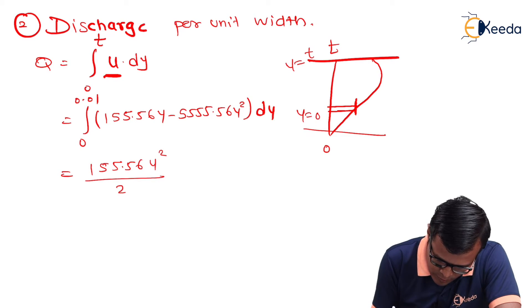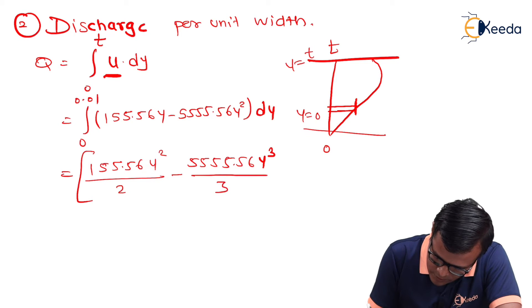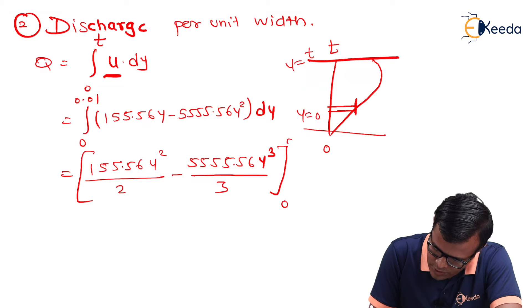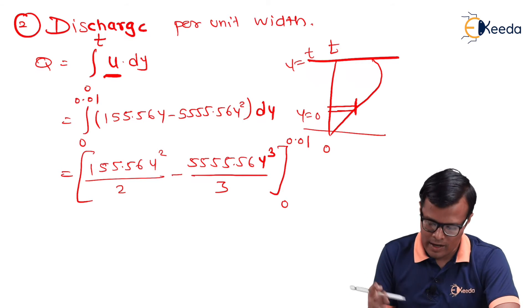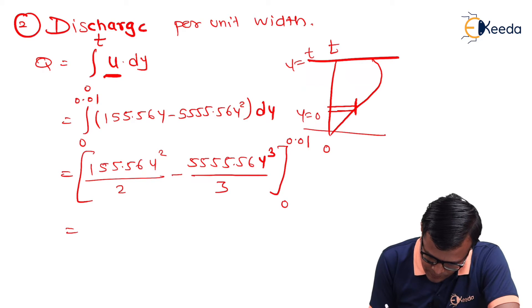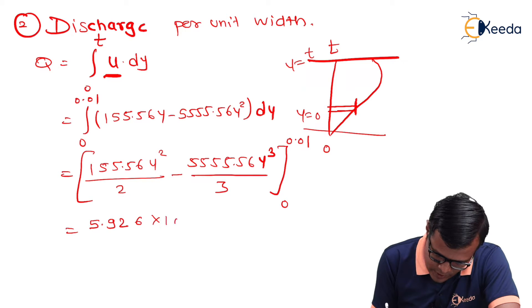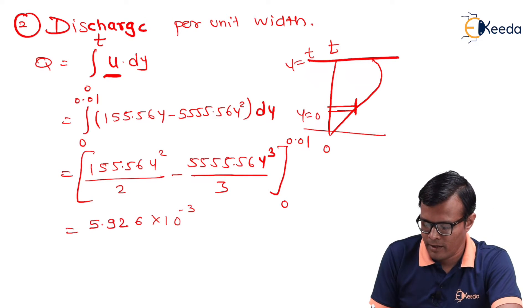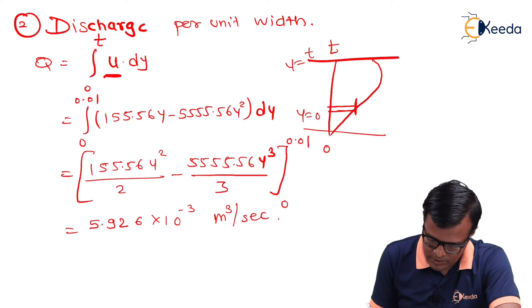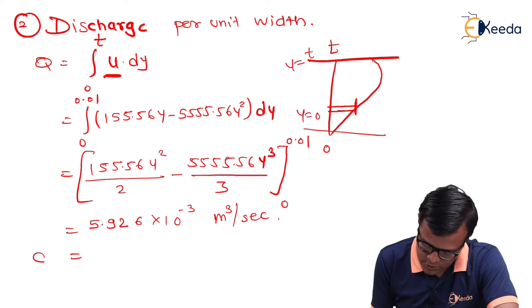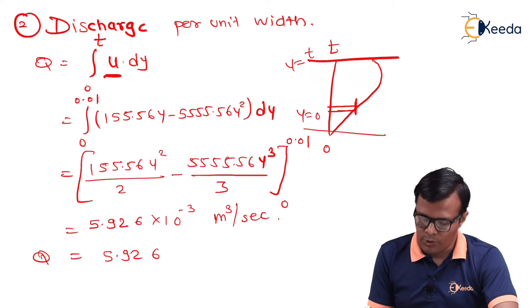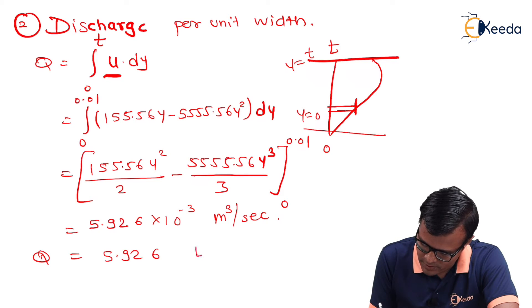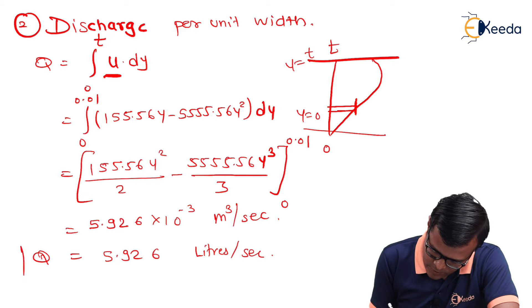So, 155.56y²/2 - 5555.56y³/3, this square bracket is having limits from 0 to 0.01. Having limit 0 has no meaning, so we will just put value of y as 0.01 and we will find out the answer. So it will become 5.926 × 10⁻³, obviously the unit will be in m³/s. If I want to convert it in simplified form, 1000 liter = 1 m³, so 10⁻³ is absorbed, it becomes liters per second.